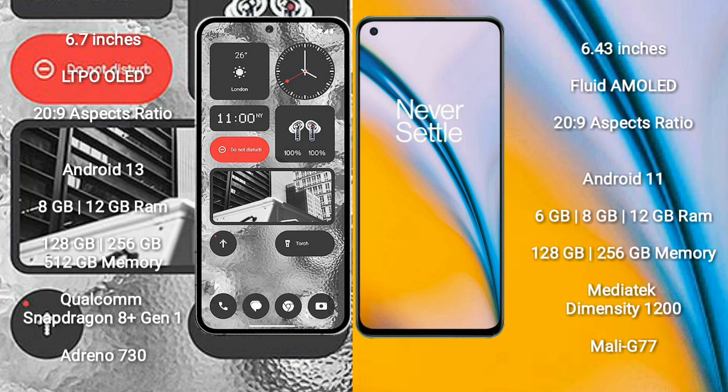Nothing Phone 2 runs on the Android 13 operating system. OnePlus Nord 2 runs on the Android 11 operating system.